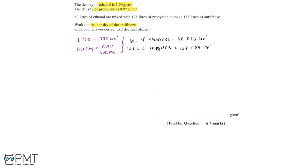To find the density of the antifreeze, we need to know the mass and the volume of the antifreeze. We're told the volume is 188 litres, which equals 188,000 centimetres cubed. To find the mass of the antifreeze, we find the mass of 60 litres of ethanol and the mass of 128 litres of propylene, then add these values together.